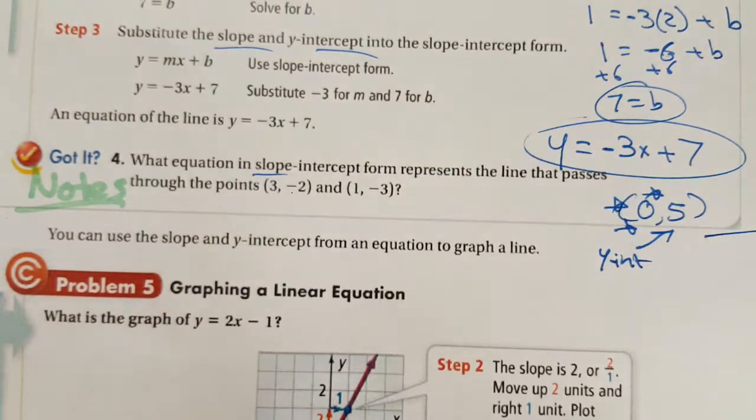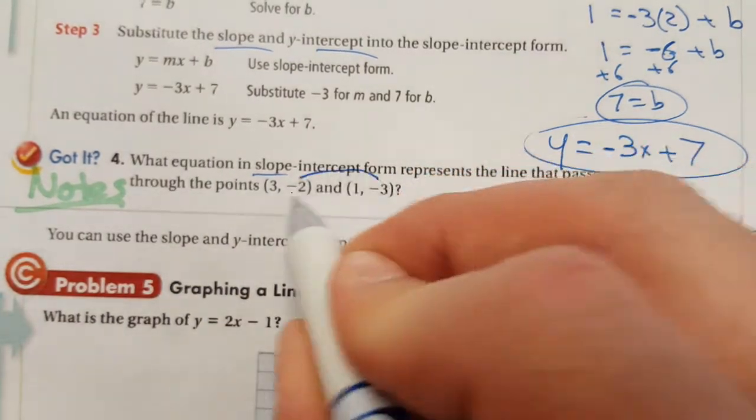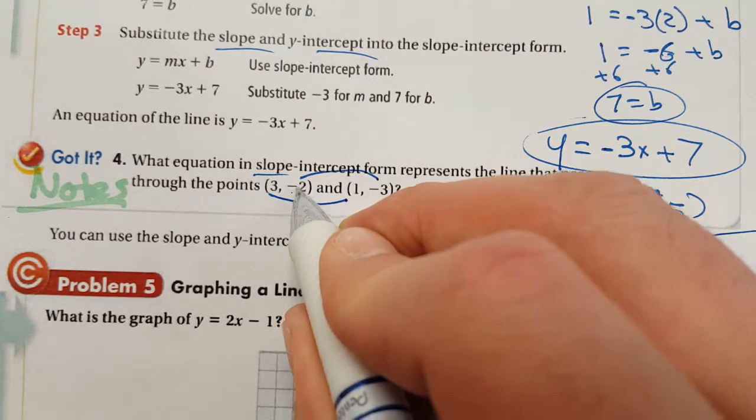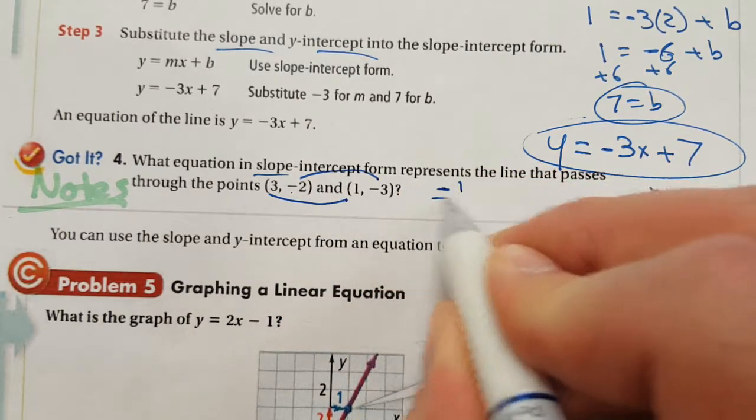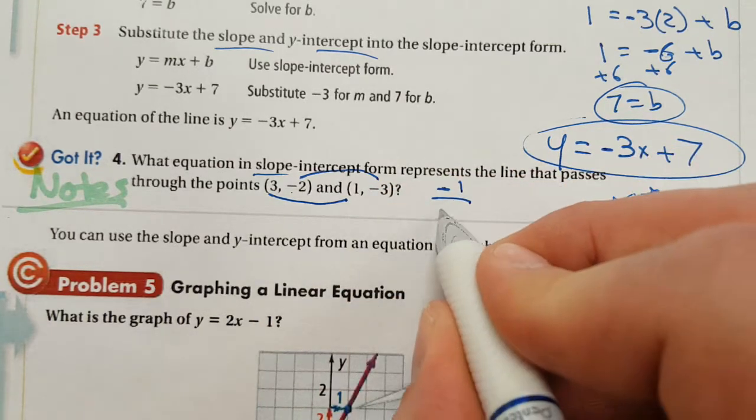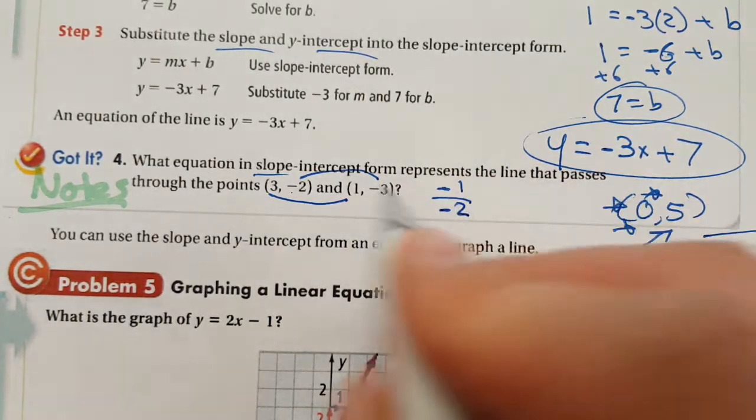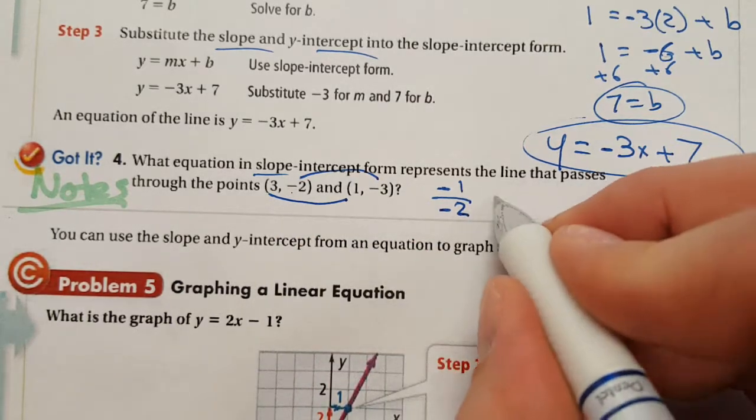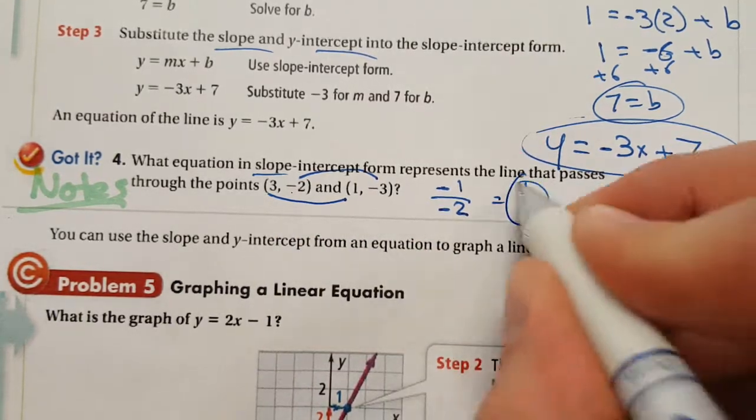So first, the only thing you can do is to find the slope. Here we go. Change of Y, change of X, a little loop-de-loop method. Here we go. Going from negative two to negative three I lost one. Going from three to one, I lost two. Is that right? Yeah, here we go. So I lost one, lost two. Negative one over negative two simplified is one half. So there's my slope.